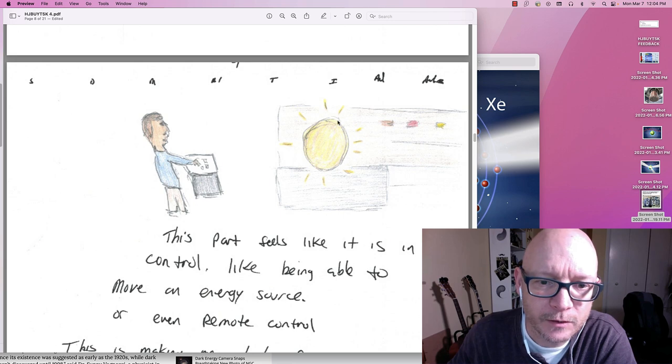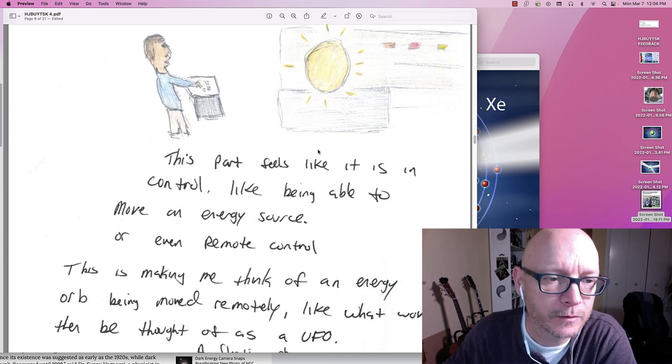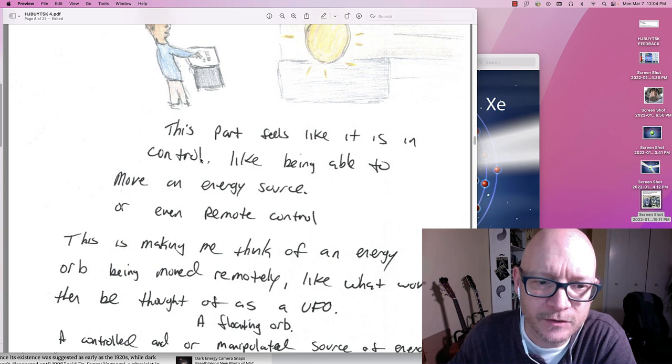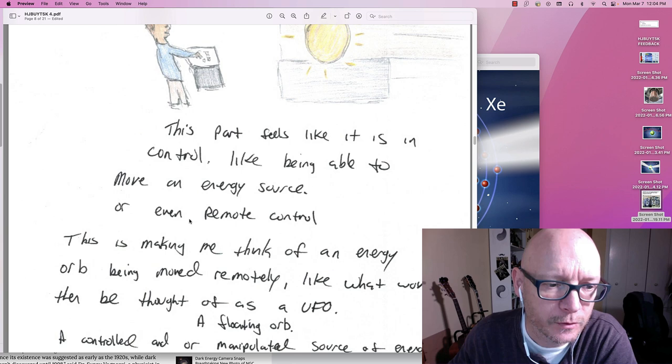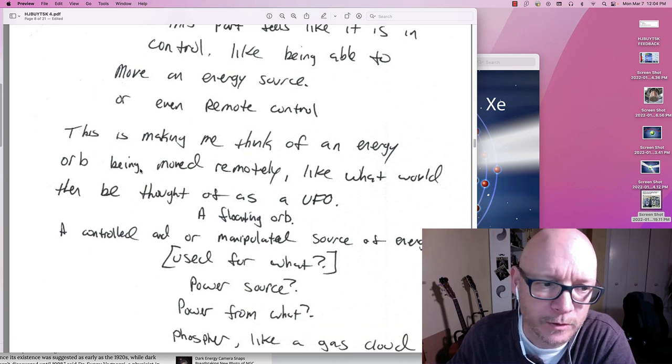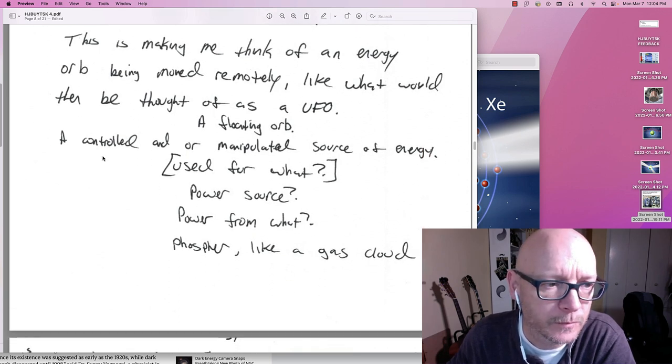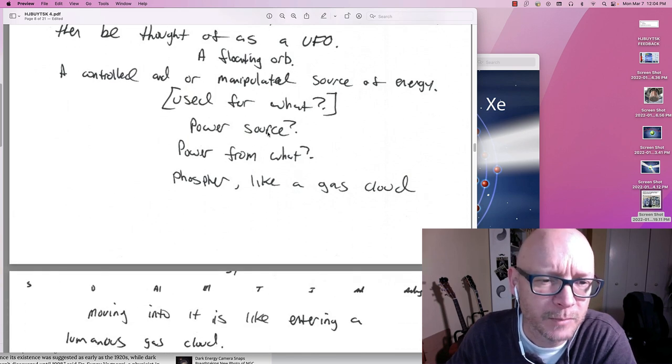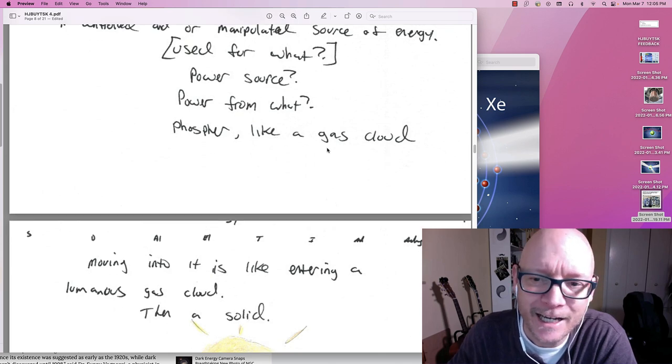Here's this person I was perceiving. And here's the experiment here. This part feels like it is in control. Like being able to move an energy source. Or even remote control. It makes me think of an energy orb. Being moved remotely. Like what would be thought of as a UFO. A floating orb. A controlled and or manipulated source of energy. What use for what though I wonder. Power source I wonder. Power from what? Again I wonder. Phosphor. Like a gas cloud.